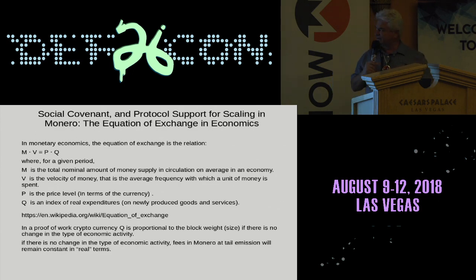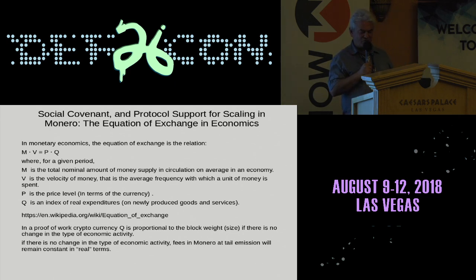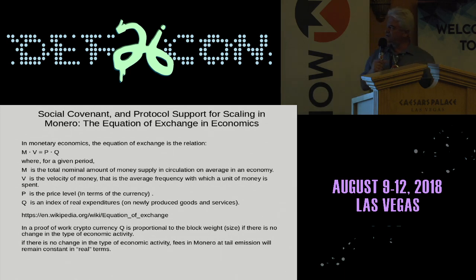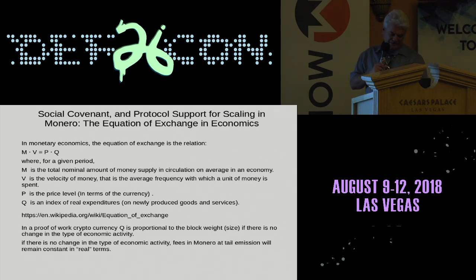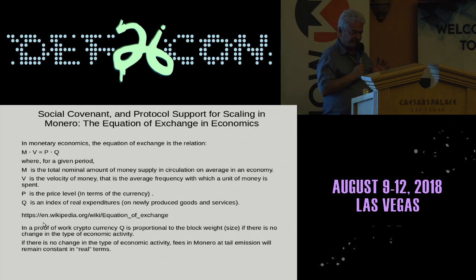I'm going to briefly talk about something else: the equation of exchange in economics. The equation of exchange is actually a sort of tautology. You have M, the money supply, which in a cryptocurrency is set by protocol. V is the velocity.